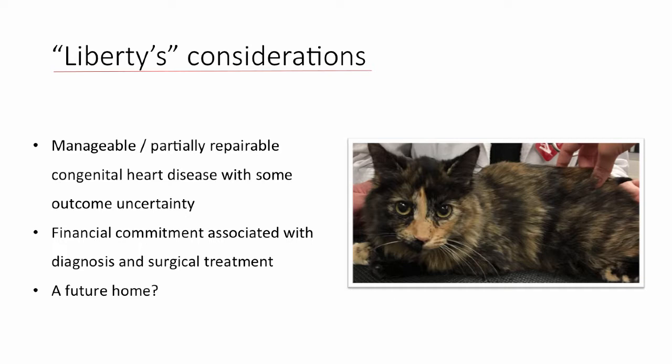Seen a month post-op, she had resolution of volume overload, her heart shrunk way down, pulmonary hypertension improved, and the VSD appeared to have less flow through it — probably because her heart wasn't as dilated and stretched. She still has the VSD for life but may be able to handle it okay, and she had clinical resolution of heart failure. We continued sildenafil and managed to take her off heart failure medications. She is still looking for a home. This was an example of identifying partially manageable disease that was worth pursuing because the prognosis was good if we could eliminate the PDA.